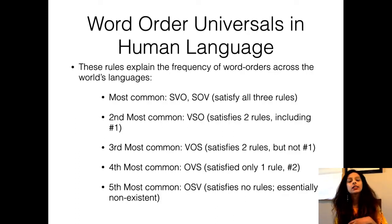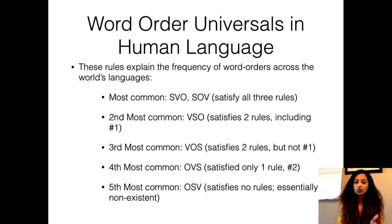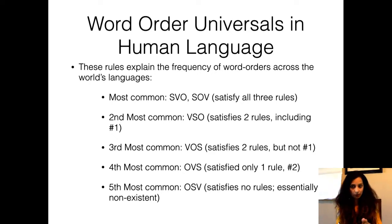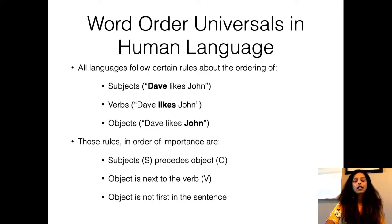If you look at different word orders across 7,000 languages, the two most common word orders are SVO — subject, verb, object — and SOV — subject, object, verb. English has SVO word order. Japanese has SOV. Both SOV and SVO satisfy all three rules: subject precedes object, object is next to the verb, and object is not first in the sentence.